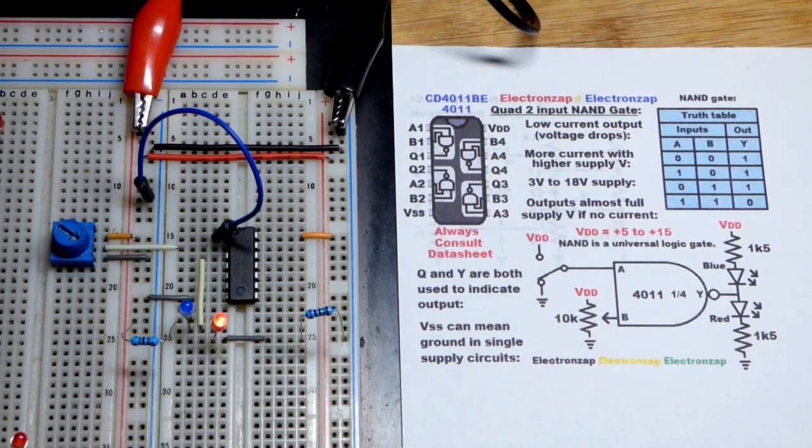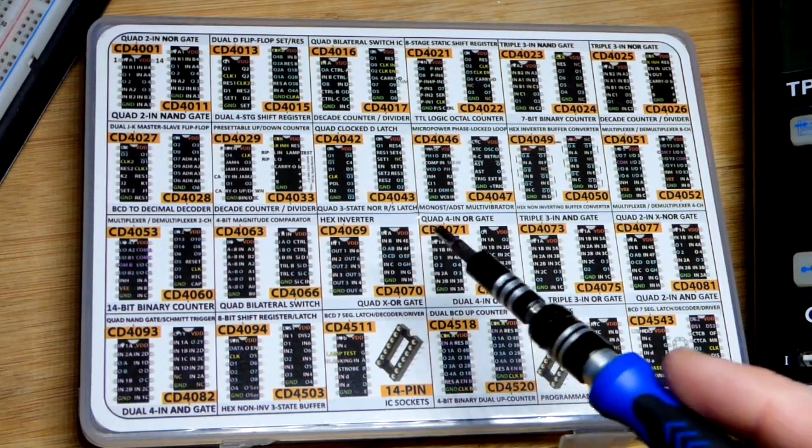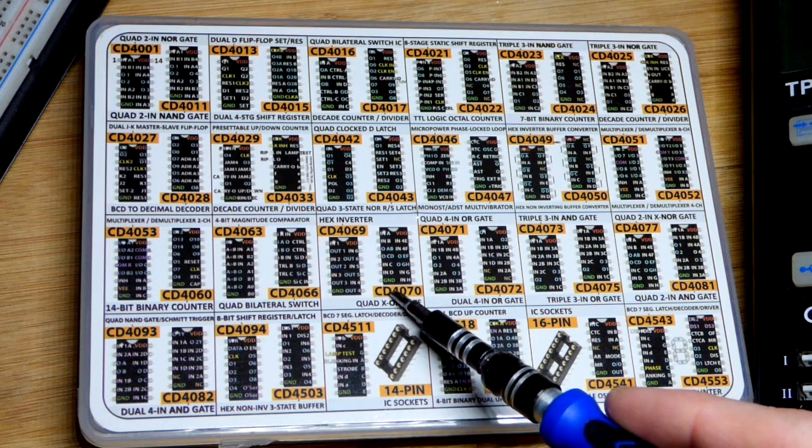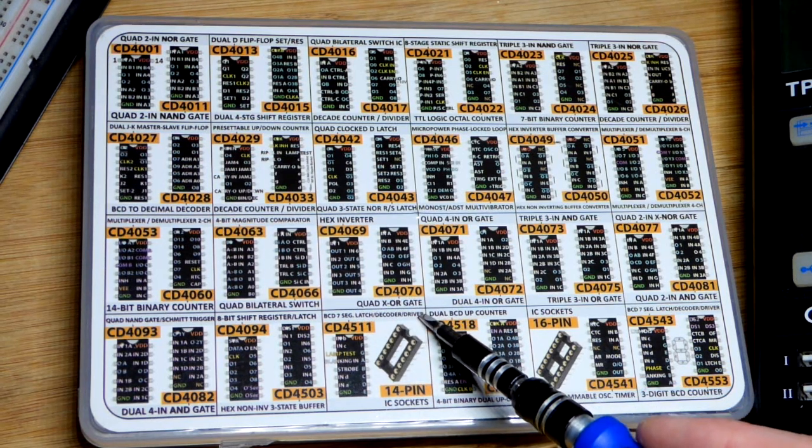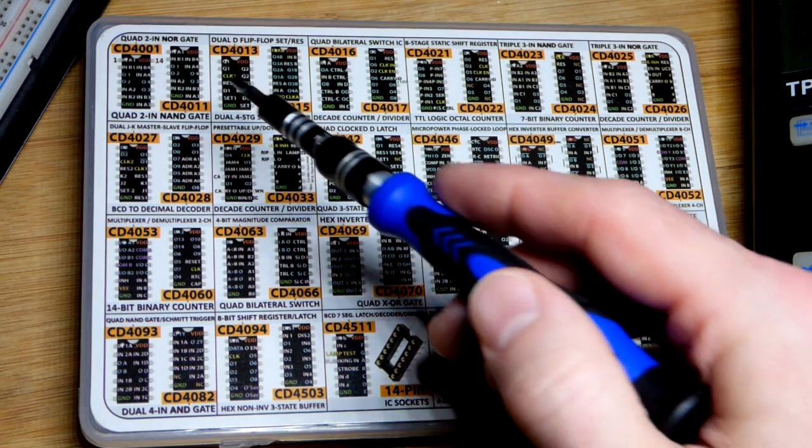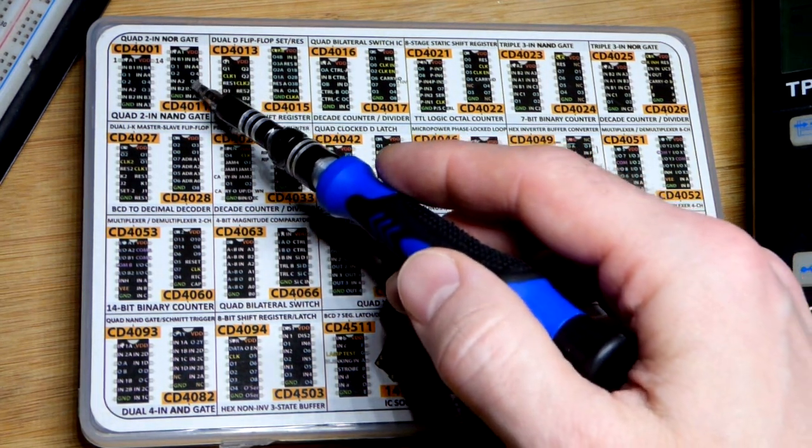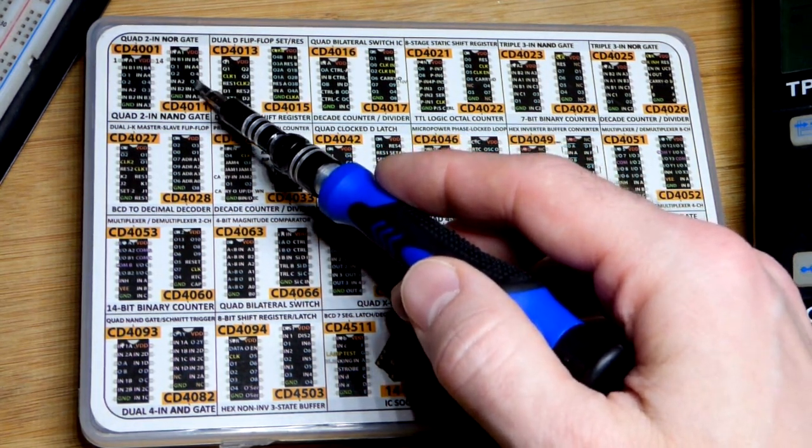Here's the kit I got the integrated circuit from. It has the part numbers for each of them and the different gates or whatever other circuitry is in the integrated circuit. The one we're going to use in this video is up here.